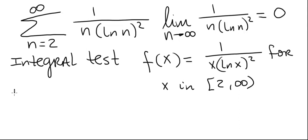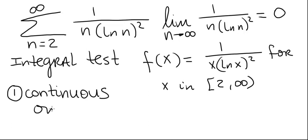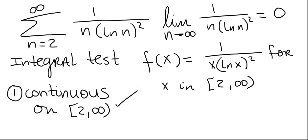To use the integral test we must check that the function satisfies four conditions. The first is that it is continuous on the interval 2 to infinity. The denominator is x times ln of x squared. The only time the denominator is zero for positive values of x is when x equals 1. For any value of x greater than or equal to 2, nothing makes the denominator zero, so the function is continuous on the interval 2 to infinity.